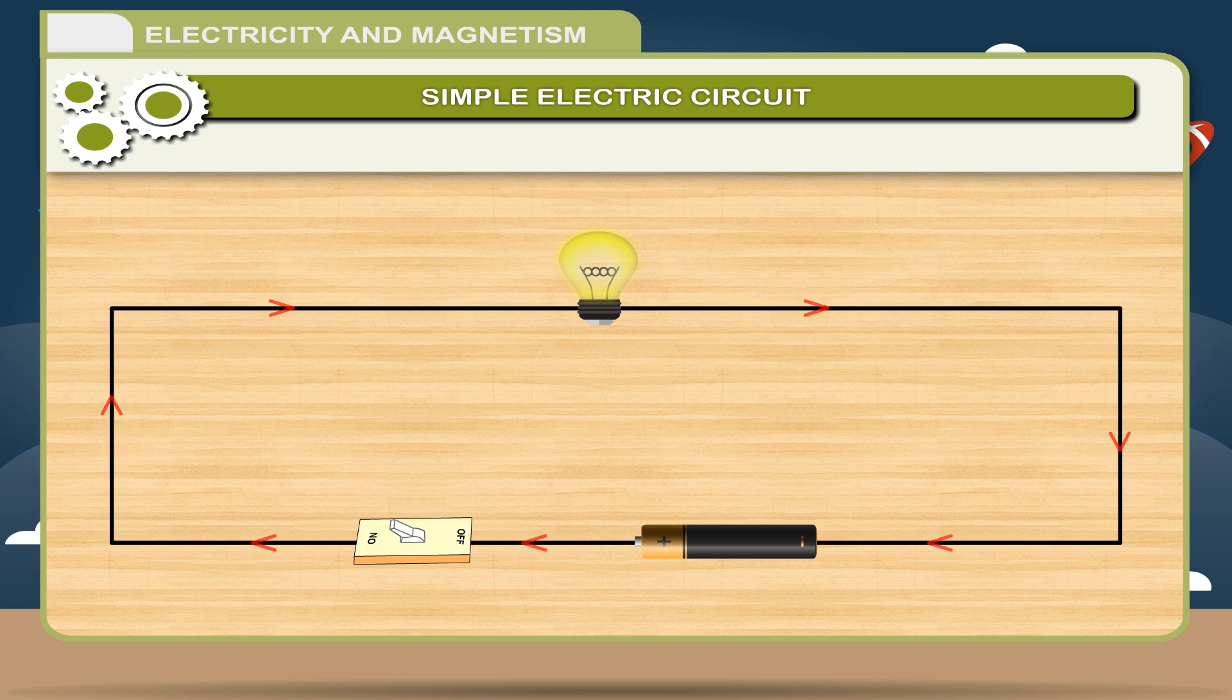Simple electric circuit. There is a complete pathway for the flow of electric current. This pathway is known as electric circuit. When the electric circuit is complete only then the bulb in a circuit lights up otherwise not.